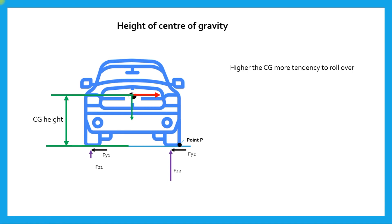One important parameter which affects the rollover behavior is the height of the center of gravity. If the vehicle has a very high center of gravity, that means the moment which is generated at point P due to the centrifugal force will also be very high.